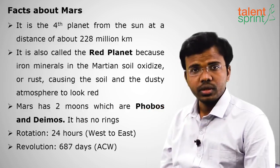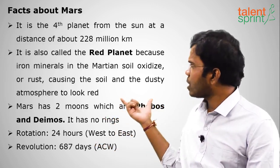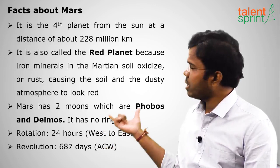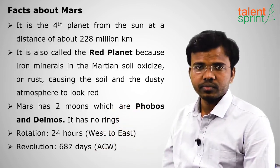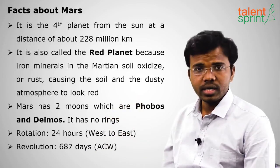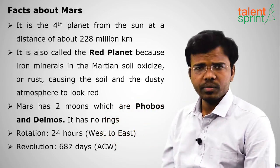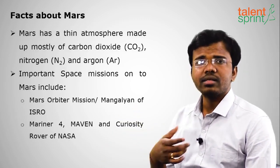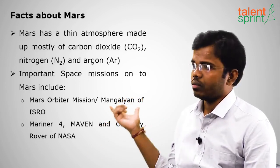Mars takes 24 hours for one rotation, moving from west to east. Its revolution period is 687 days in the anti-clockwise direction around the sun. Mars has a thin atmosphere composed of carbon dioxide, nitrogen, and argon.